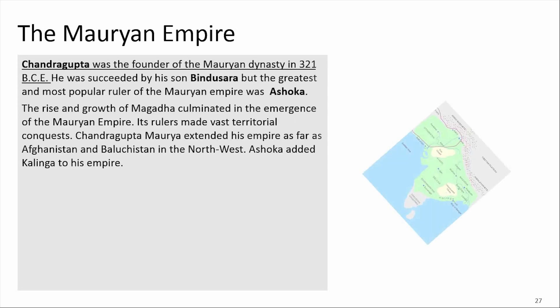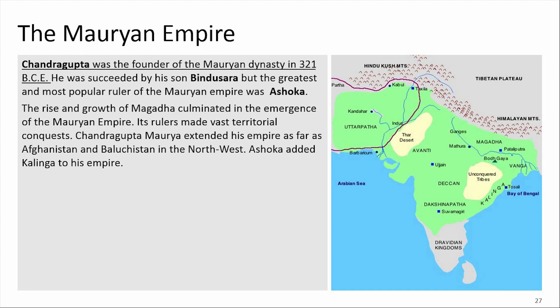Chandragupta was the founder of the Mauryan dynasty in 321 BCE. He was succeeded by his son Bindusara, but the greatest and most important ruler of the Mauryan Empire was Ashoka. The rise and growth of Magadha culminated in the emergence of the Mauryan Empire. Its rulers made vast territorial conquests — Chandragupta Maurya extended his empire as far as Afghanistan and Baluchistan in the northwest, while Ashoka added Kalinga to his empire.